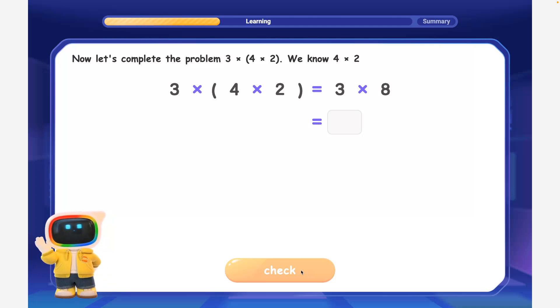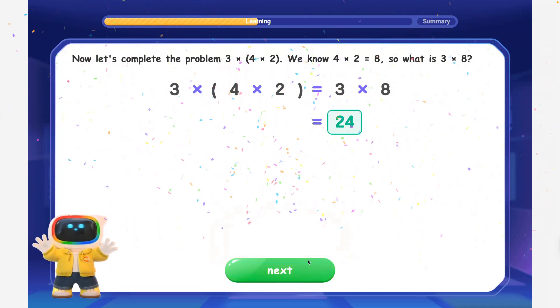Now let's complete the problem: 3 times, 4 times 2. We know 4 times 2 is equal to 8, so what is 3 times 8? Great work! 3 times 8 is equal to 24, so 3 times, 4 times 2, equals 24.